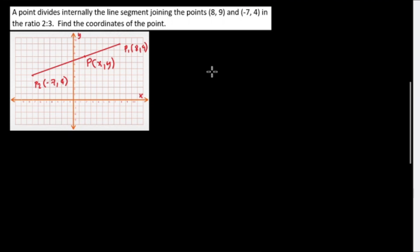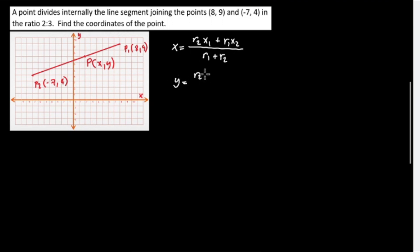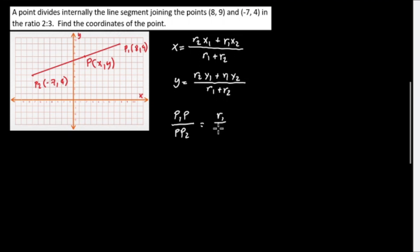The formula for division of a line segment: X equals (R2·X1 plus R1·X2) all over (R1 plus R2), and Y equals (R2·Y1 plus R1·Y2) all over (R1 plus R2). Using P1P over PP2 equals R1 over R2, we need to identify R1 and R2.